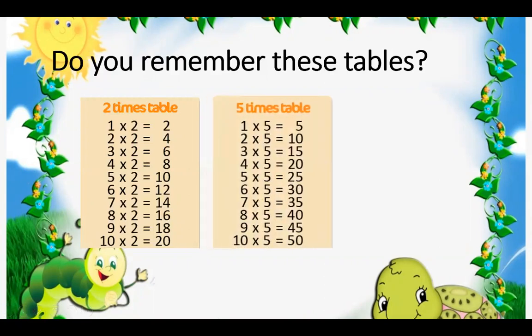5 times table: 1 times 5 is 5, 2 times 5 is 10, 3 times 5 is 15, 4 times 5 is 20, 5 times 5 is 25, 6 times 5 is 30, 7 times 5 is 35, 8 times 5 is 40, 9 times 5 is 45, and 10 times 5 is 50.